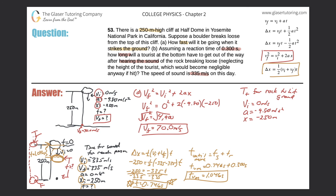We also know the final velocity — we calculated it as negative 70.0 meters per second. It's negative because the object is traveling in the negative y direction, so when you take the square root you take the negative value. To minimize propagating errors, I'll use a formula with only the given values. Using the equation: displacement equals v_i times t plus one half a t squared.